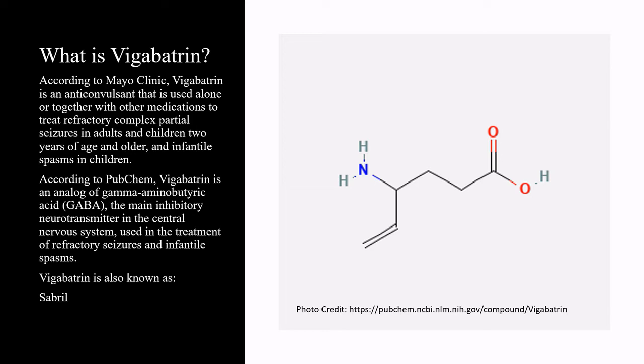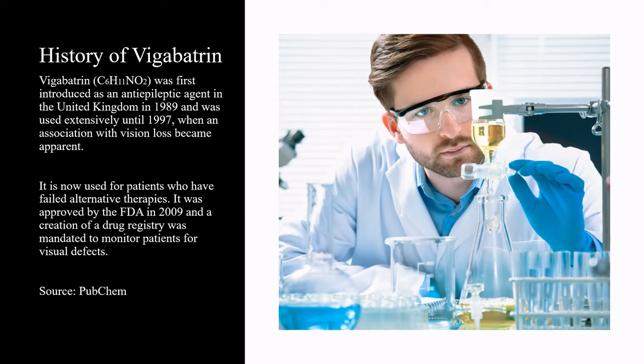Vigabatrin is also known as Sabril. Vigabatrin was first introduced as an anti-epileptic agent in the United Kingdom in 1989 and was used extensively until 1997, when an association with vision loss became apparent. It is now used for patients who have failed alternative therapies. It was approved by the FDA in 2009 and a creation of a drug registry was mandated to monitor patients for visual defects.